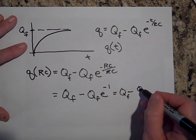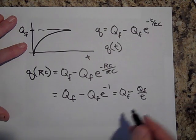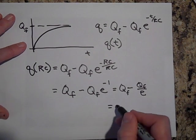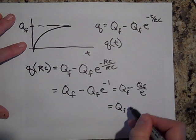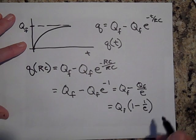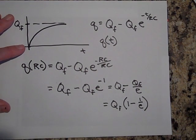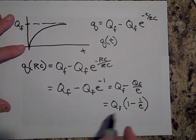Well, minus Q final over E. Or I could factor out a Q final. And that's the same thing as one minus one over E. So, if E is considered to be three, just a ballpark figure, then that's two thirds.